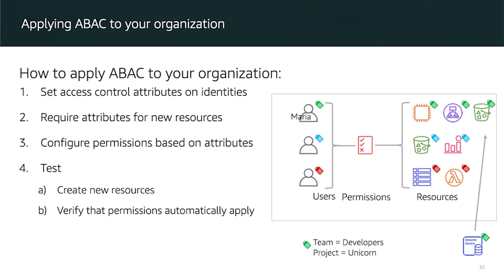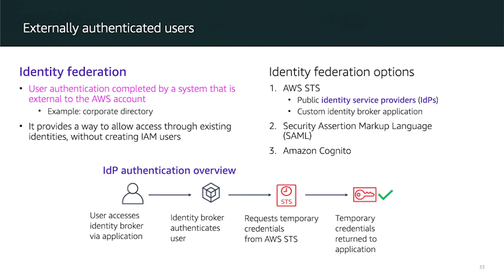Test your configuration by trying to create an Amazon Aurora database instance without the required tag — the attempt should fail. Then try creating the database instance again with the required tag; this time you should be able to create the resource successfully. You could also try to access the database instance as the Maria user, and your access should succeed.